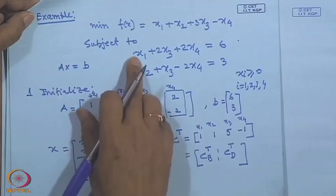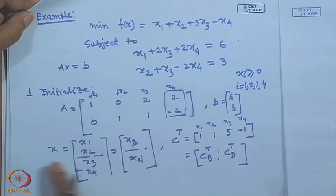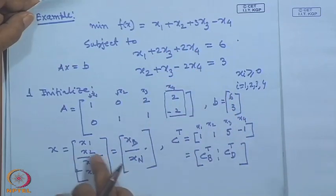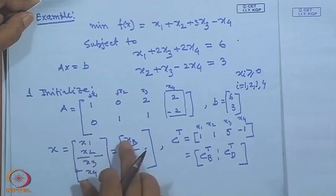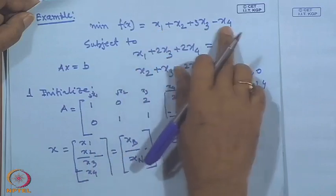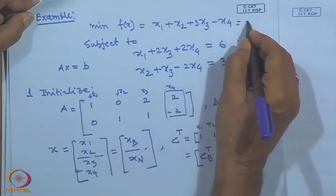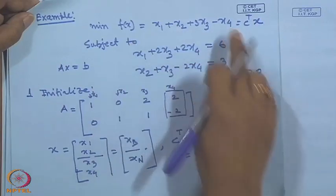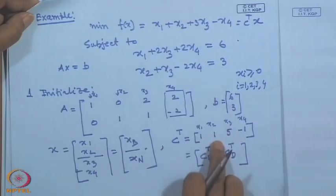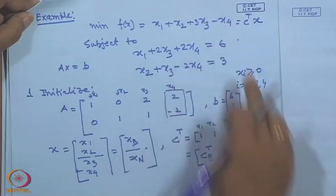Since the equations are already in canonical form, we partition: x1, x2 into the basic variable vector x_B, and x3, x4 into the non-basic variable vector x_N, using standard notation with subscripts B and N.